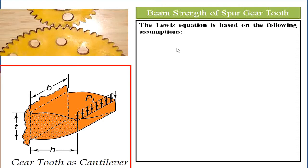Moving to the beam strength of the spur gear tooth: if only one tooth is engaged with the other gear, the total load acts on that tooth and the tooth may fail due to bending. Our aim is to find the bending strength of the gear tooth. This equation is based on Lewis's analysis.